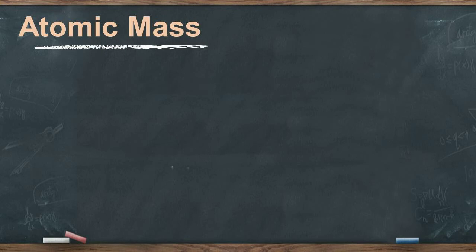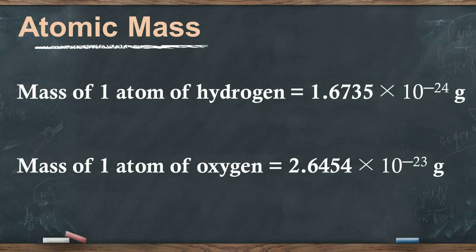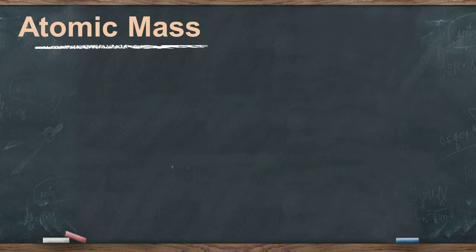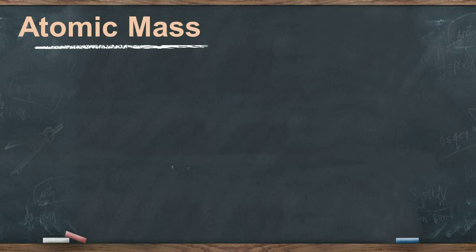Individual atoms are very small and have very small masses. For example, the mass of one atom of hydrogen is approximately 1.6735 × 10⁻²⁴ grams, and the mass of one atom of oxygen is approximately 2.6454 × 10⁻²³ grams. Since these masses are very small, it is not practical to compare atomic masses in grams. Therefore, it was considered appropriate to use the mass of a light atom as a unit and relate the masses of other atoms to it.